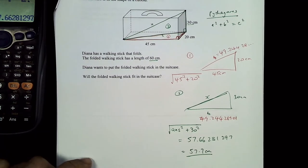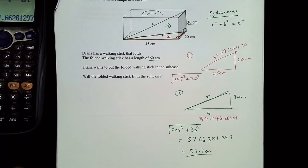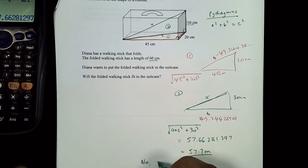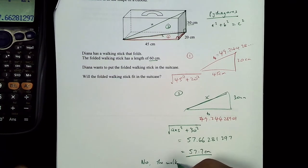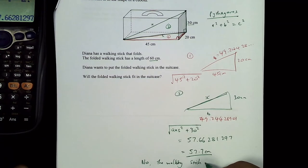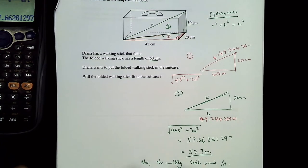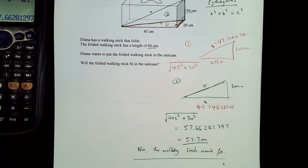57.7 cm is less than 60 cm, so the walking stick will not fit inside the suitcase.